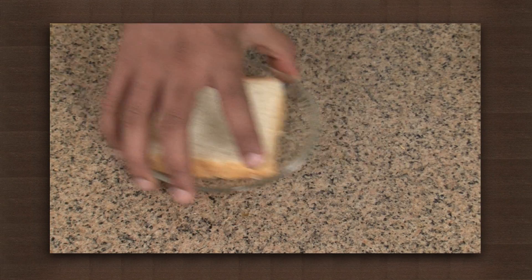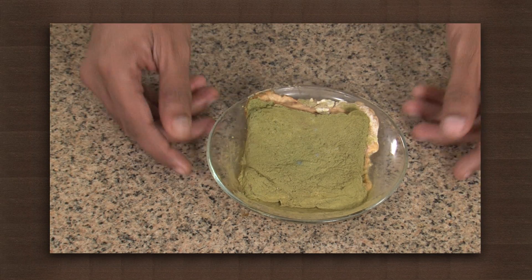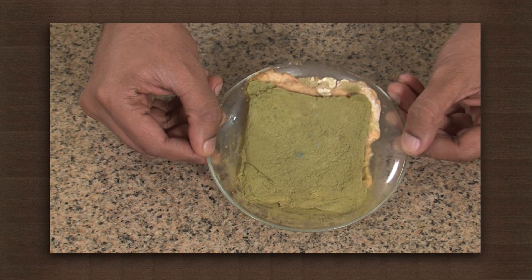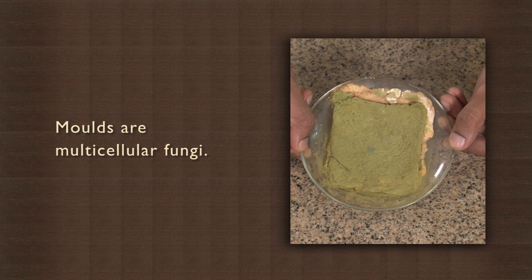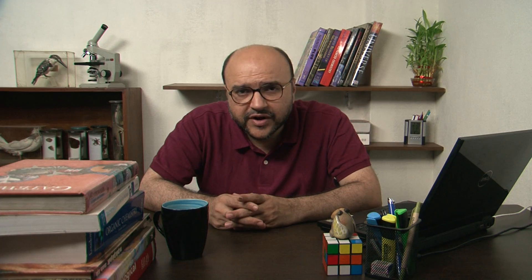But not all fungi are useful — there are harmful fungi too, like molds, which grow on stale bread like this one here. Fungi also grow on wet leather, decaying vegetables, and fruits. Molds are multicellular fungi. Try and find out the names of five useful and five harmful fungi.